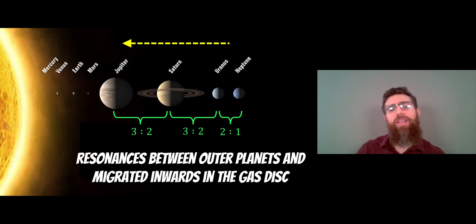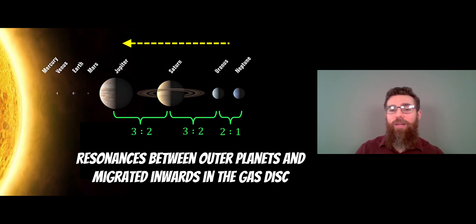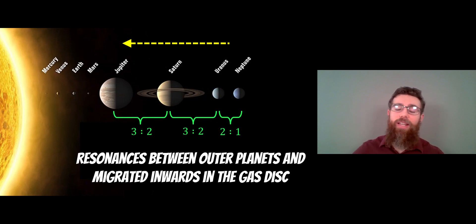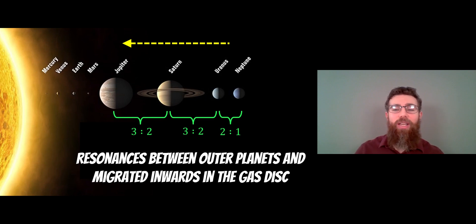In order to get the configuration that we have, it's thought that the outer planets were in orbital resonance — Jupiter, Saturn, Uranus, and Neptune were all in orbital resonance with each other. That means, for example, Jupiter would orbit three times for every two orbits of Saturn. There was this resonance chain between all the outer planets, and Jupiter migrated inwards in the gas disk, leaving us with the configuration we currently see, which explains why ours is slightly different to what we see around other stars.